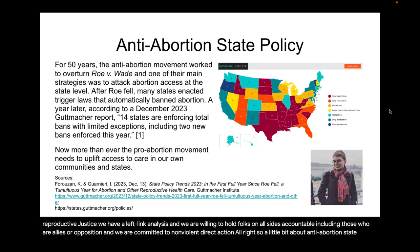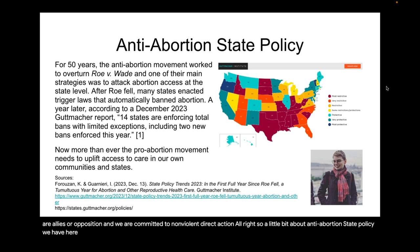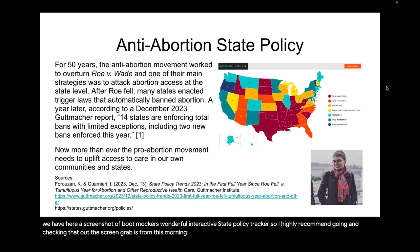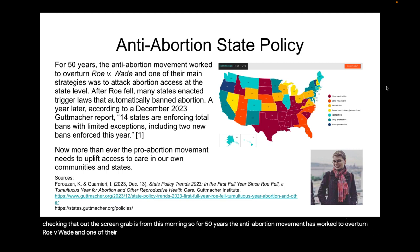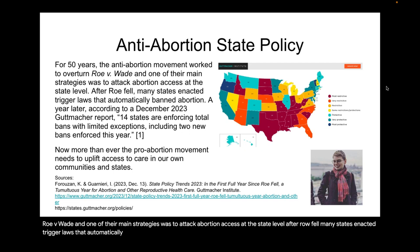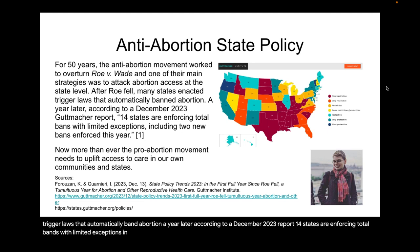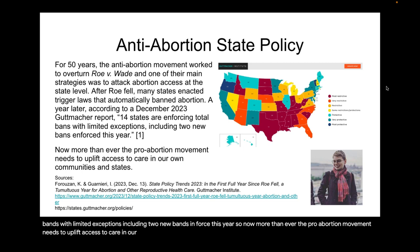A little bit about anti-abortion state policy. We have a screenshot of Guttmacher's wonderful interactive state policy tracker, so I'd highly recommend going and checking that out. For 50 years, the anti-abortion movement has worked to overturn Roe v. Wade, and one of their main strategies was to attack abortion access at the state level. After Roe fell, many states enacted trigger laws that automatically banned abortion. A year later, according to a December 2023 Guttmacher report, 14 states are enforcing total bans with limited exceptions. Now more than ever, the pro-abortion movement needs to uplift access to care in our own communities and states.